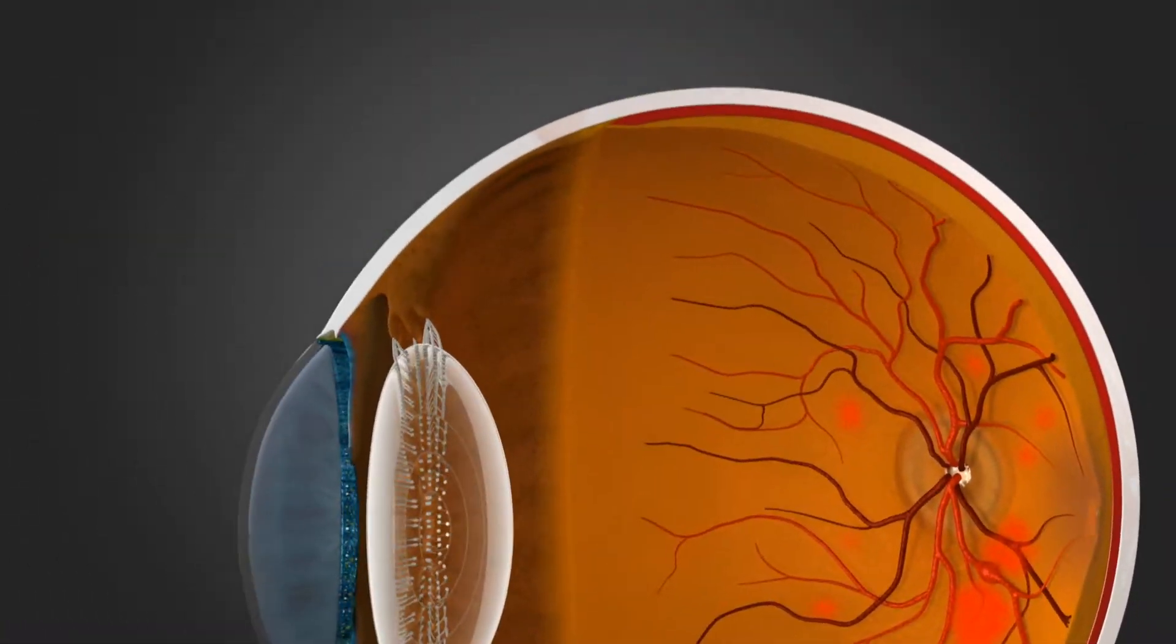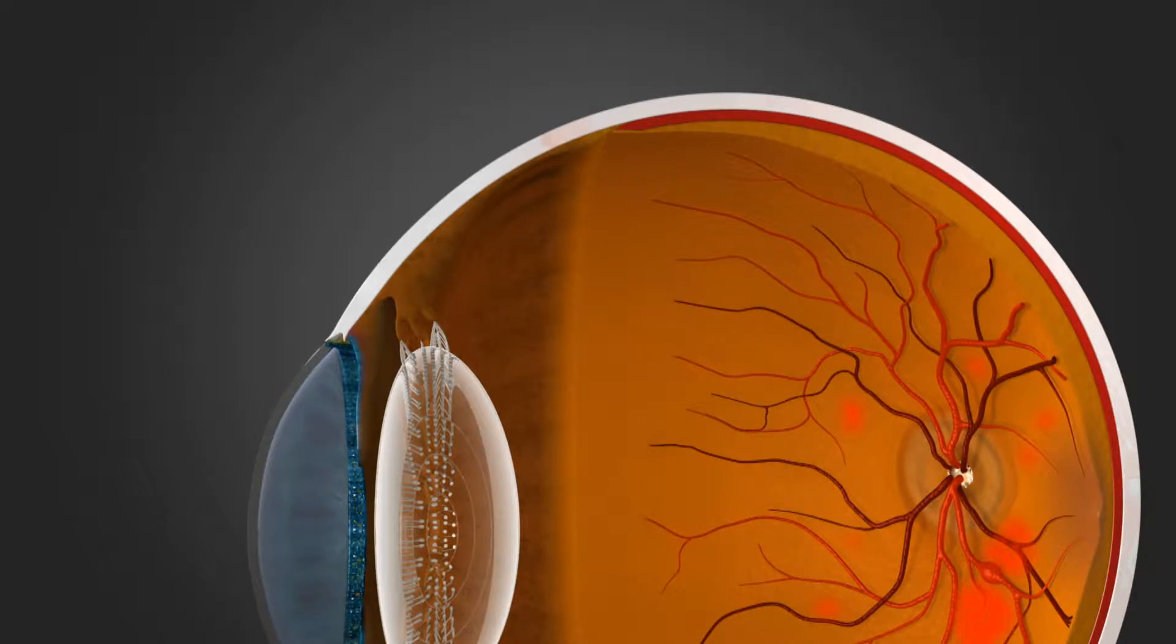To treat diabetic macular edema involved in the center of the macula, a small needle is inserted into the vitreous, the jelly portion of the eye.